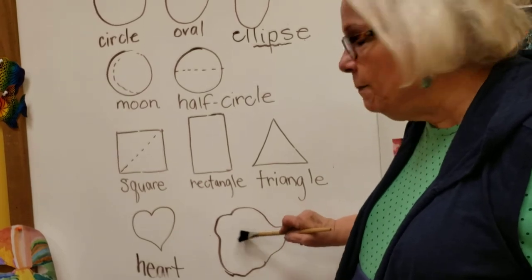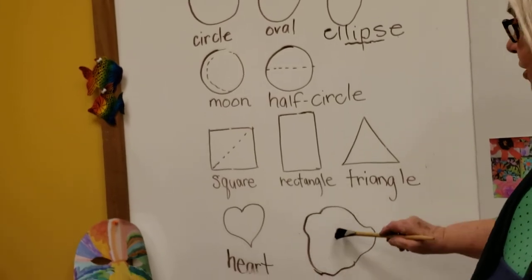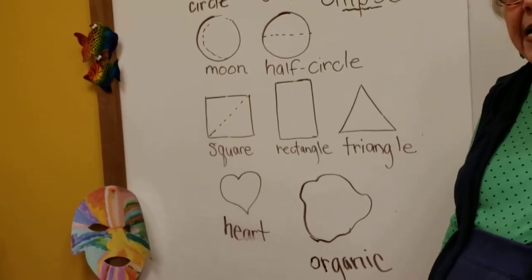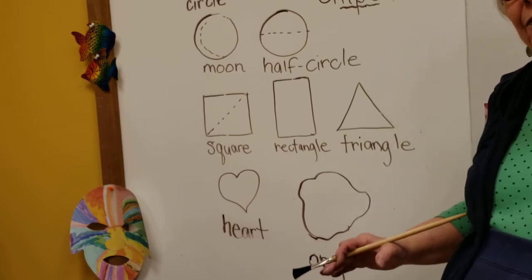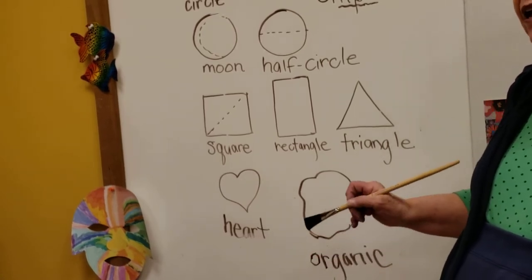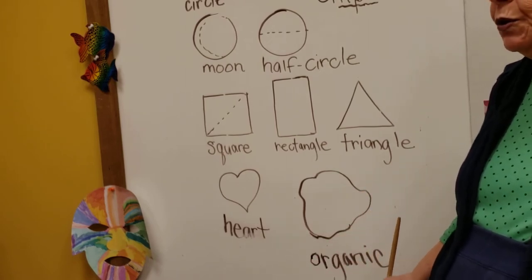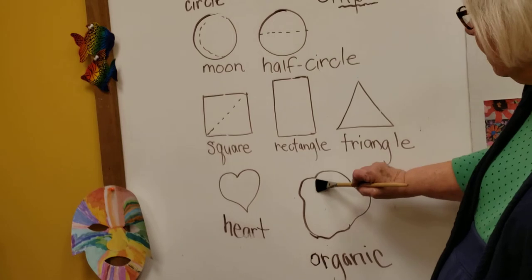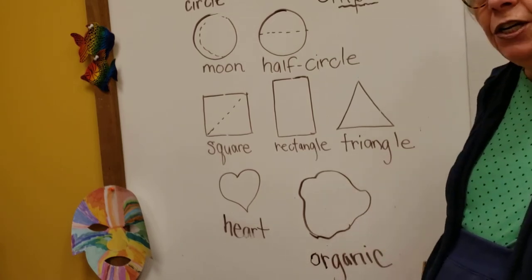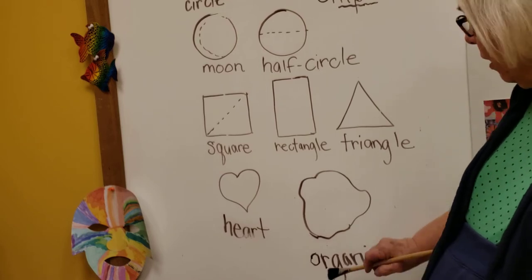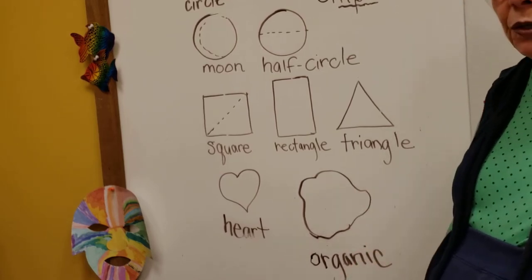And finally a shape that we did not talk about at all. This is an organic shape and this is a shape that you see a lot in nature because a lot of times things in nature don't have a definite shape, they don't fit nicely as triangles or rectangles or squares or even circles but they just have sort of a shape that's kind of hard to describe or define. We call it an organic shape. I like to think of it as a puzzle shape.